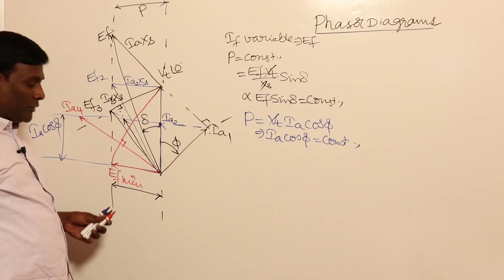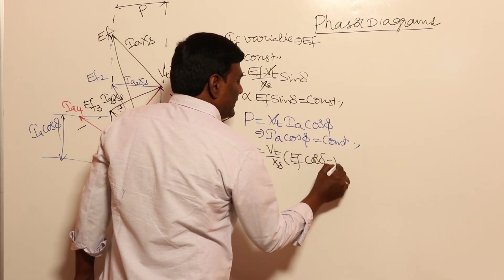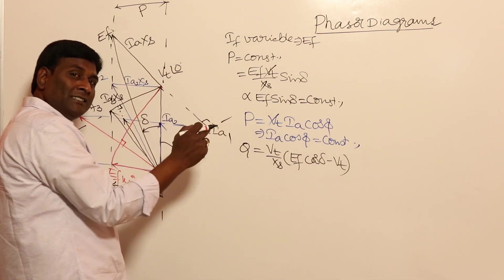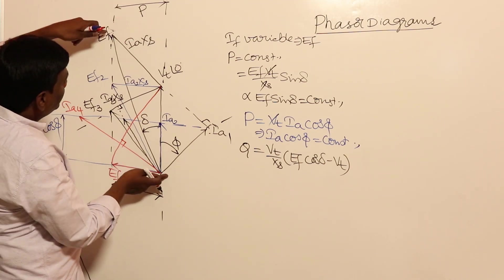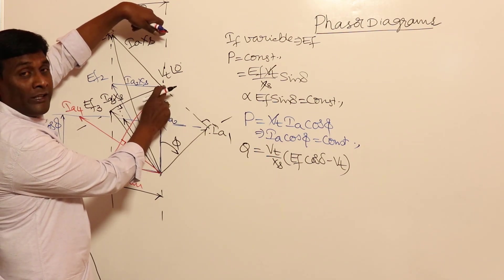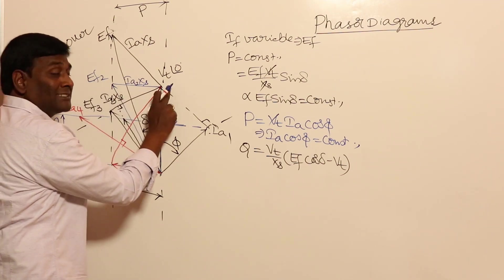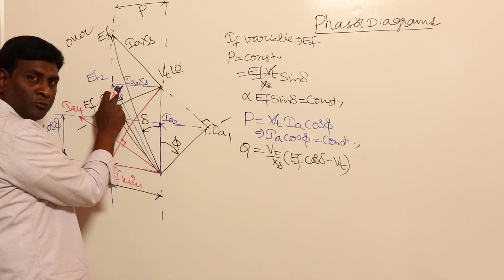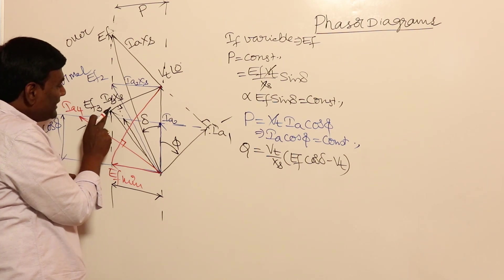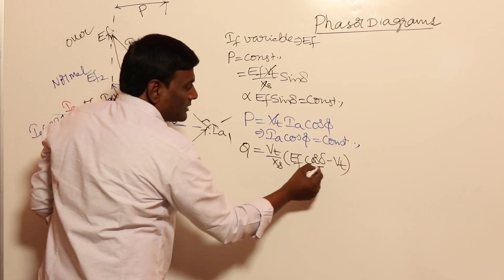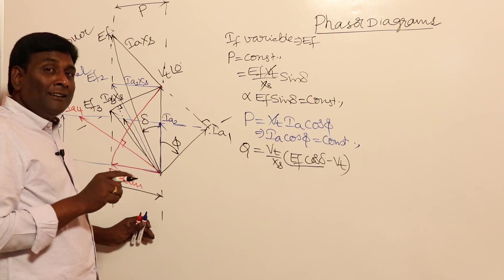Now consider reactive power. Q output = (Vt / Xs) × (EF cos delta − Vt). Since Vt and Xs are constants, reactive power depends on EF cos delta minus Vt. For the black phasor, EF cos delta > Vt, so it supplies reactive power — this is over-excitation. For the blue phasor, EF cos delta = Vt — neither delivers nor absorbs reactive power — normal excitation. For EF3, EF cos delta < Vt, so Q supply is negative — it absorbs reactive power.